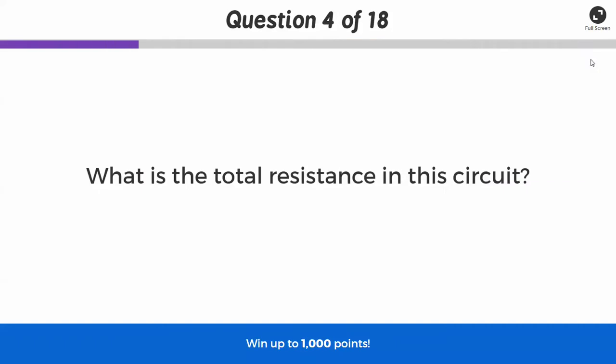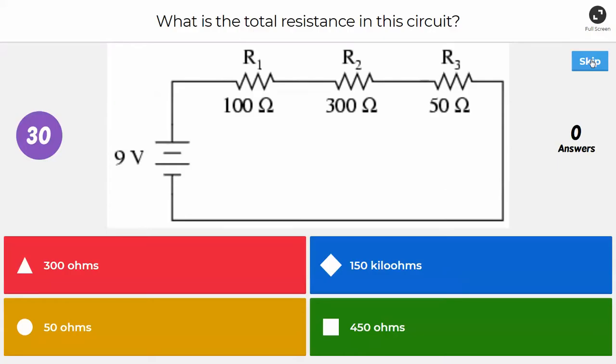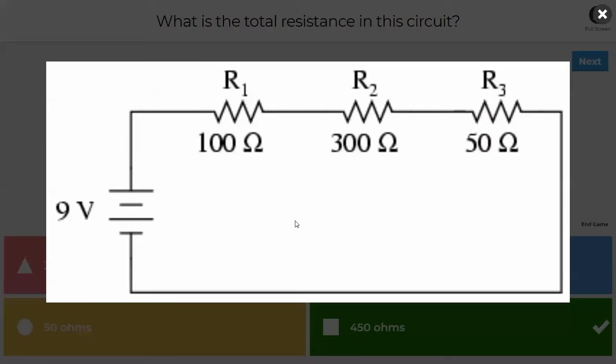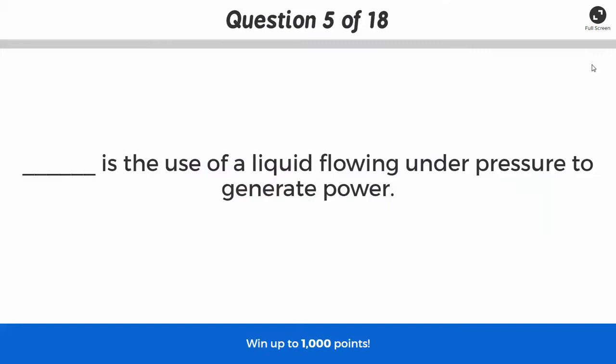All right, so, next question. What's the total resistance in this circuit? All right, this one I'll give you until the counter is at 10 seconds. This one's not too bad. Yeah, so that would be 450 ohms. Remember, if it's a series circuit, you just need to add up the values of all of the resistors in the path. So, 100 plus 300 plus 50 equals 450.